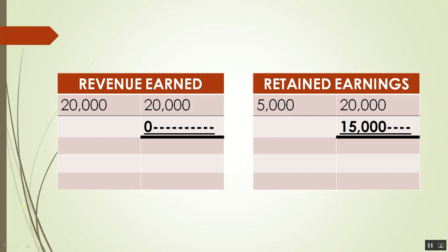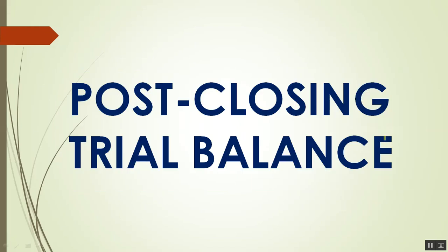Regarding posting: for example, if the normal balance of revenue is 20,000 and you close it, you debit it by 20,000, making the balance zero. In retained earnings, if you had 20,000 and then closed 5,000, it becomes 15,000. That is how closing works — we zero out the revenue, expenses, drawings, and income summary accounts.